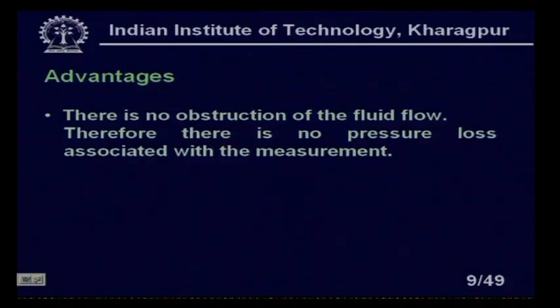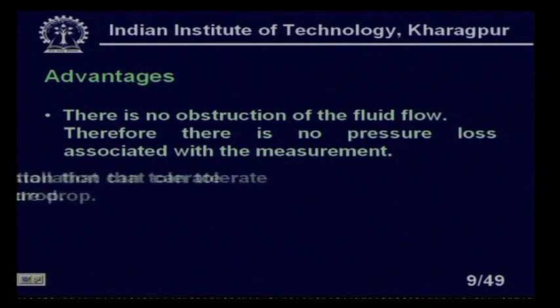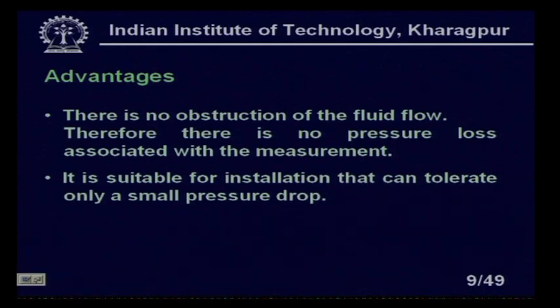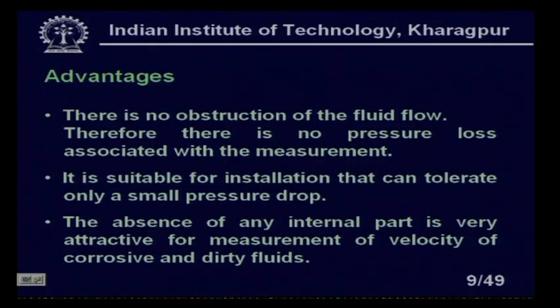There are several advantages of this type of flow meter. First, there is no obstruction of the fluid flow, therefore there is no pressure loss associated with the measurement. It is suitable for installations that can tolerate only a small pressure drop. The absence of any internal parts is very attractive for measurements of velocity of corrosive and dirty fluids, unlike turbine flow meters or orifice meters where internal components must be installed.